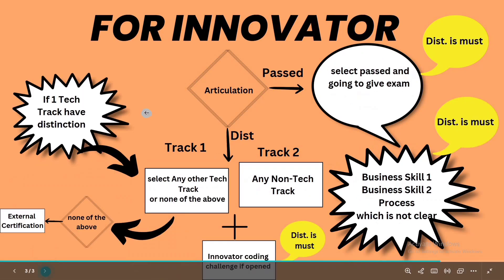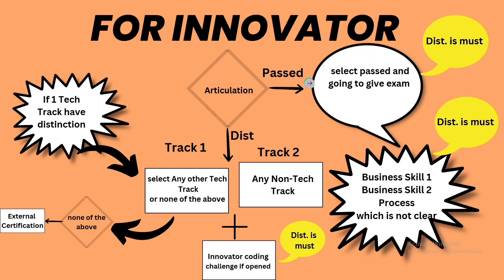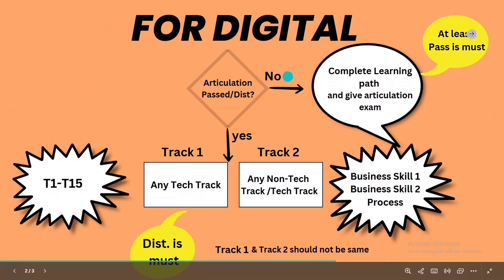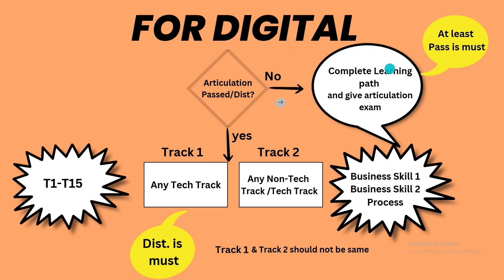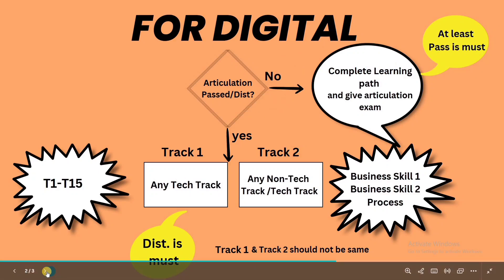Now for the innovator, articulation must be passed — it is a prerequisite. You can get either a pass or distinction. For digital, at least a pass is required, but for innovator, distinction is a must. So first let's look at the scenario where you have passed the articulation.